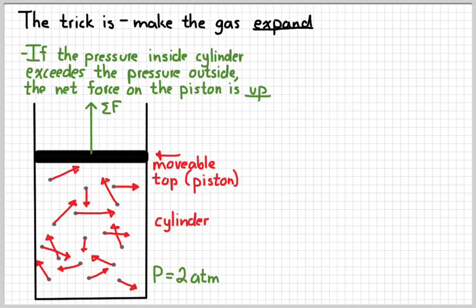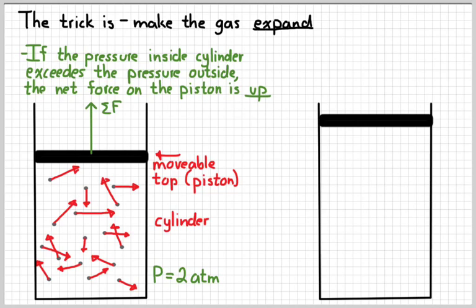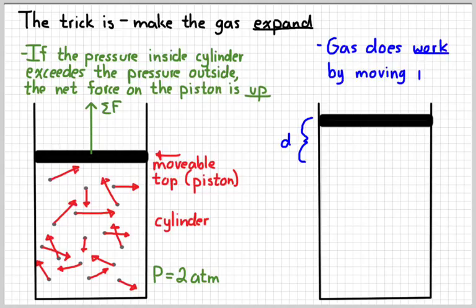When the piston is able to move, now we can do work on it. So because the piston moves some distance d, the gas is doing work on it. Remember, work is force times distance.